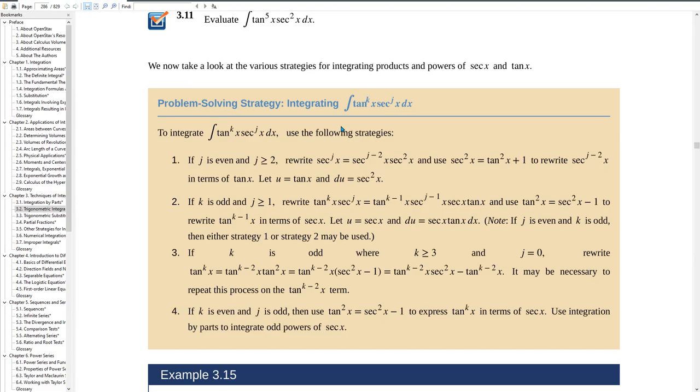Our problem has tangent to the sixth power and secant squared, so j is even—j equals two. We're going to rewrite secant to the j. Now, if you look at this, j minus two is zero, so this first term actually won't exist. Our rewriting isn't going to accomplish anything because j equals two.